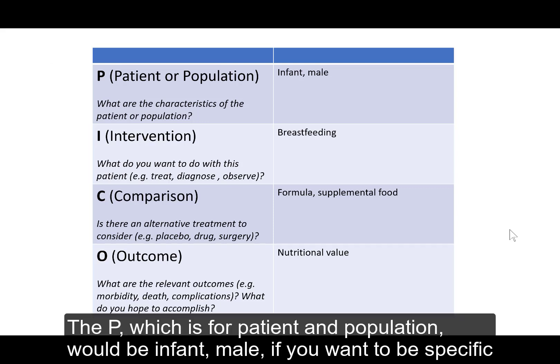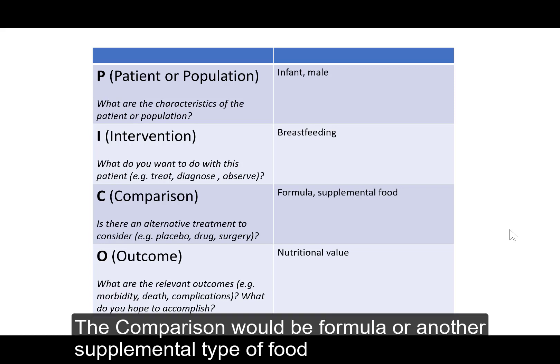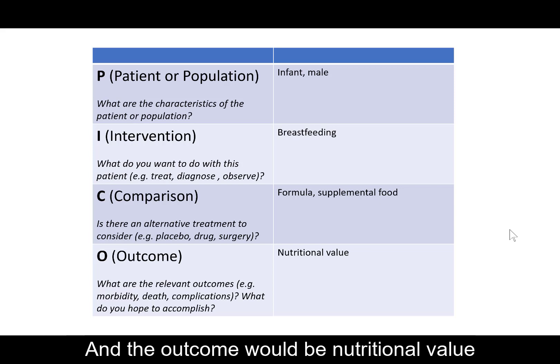The P, which is for patient and population, would be infant, male, if you want to be specific. The intervention would be breastfeeding or breast milk. The comparison would be formula or another supplemental type of food. And the outcome would be nutritional value.